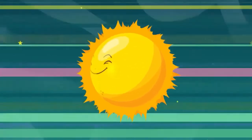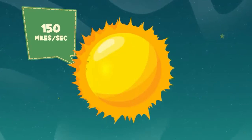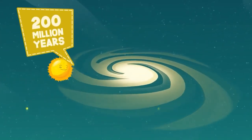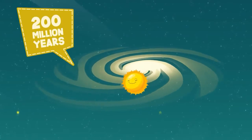In fact, the sun travels through space at roughly 150 miles per second and takes about 200 million years to complete one revolution around the center of our Milky Way galaxy.